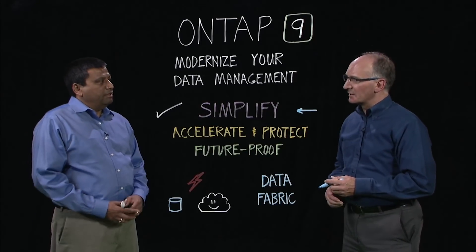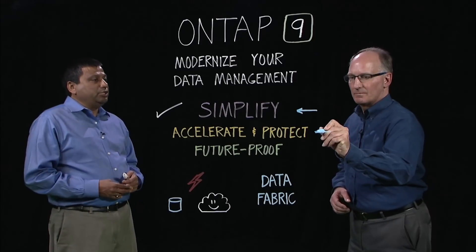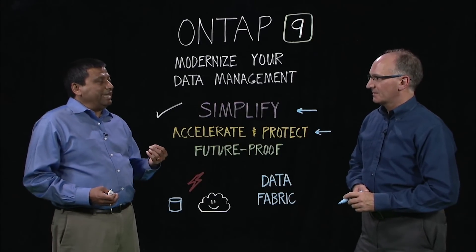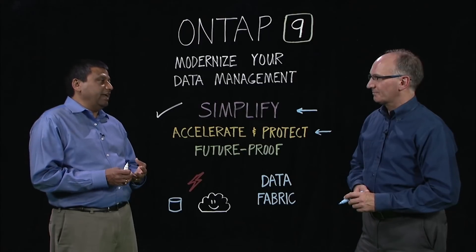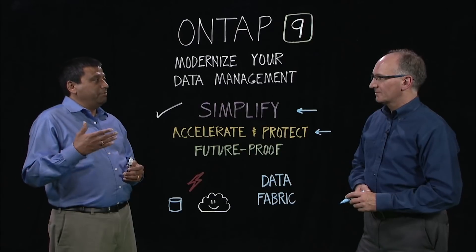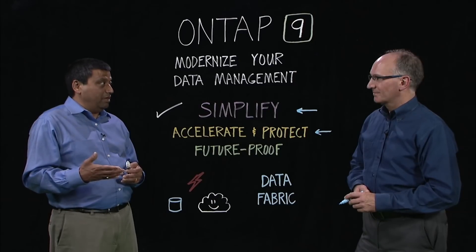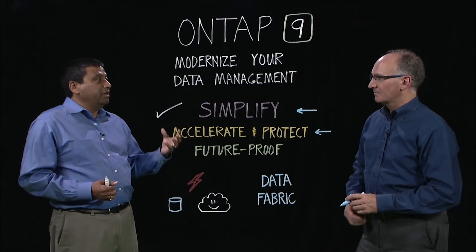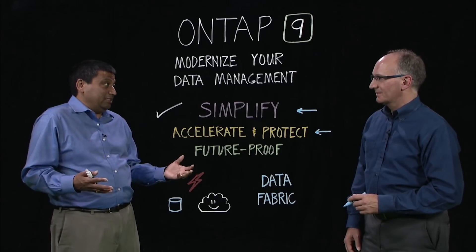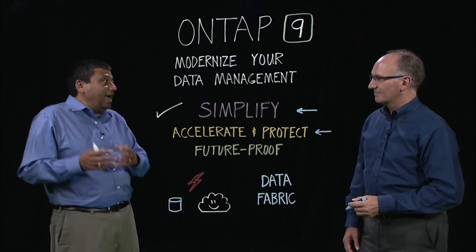Let's talk about the second pillar: accelerate and protect. What are the key innovations there? We have taken full advantage of Flash with no compromises in terms of performance, while also leveraging inline efficiencies — whether it's inline deduplication, inline compression, or data compaction. We've seen significant improvements in IOPS as well as reductions in latency based on Flash work we've done in optimizing code paths, all at the lowest cost with our efficiencies. All of this is done with integrated data protection. The whole value of ONTAP is not just in primary storage, but also in secondary storage — it's an end-to-end solution.